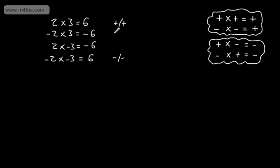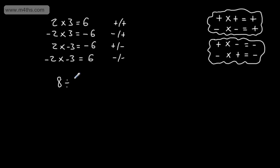Here we can see that one is negative and one is positive, and one here is positive and the other is negative. If we don't have a sign in front of a number, we assume it to be positive. So if I look at 8 divided by 4, that's going to give us 2.